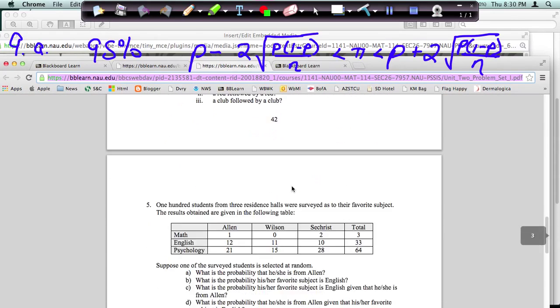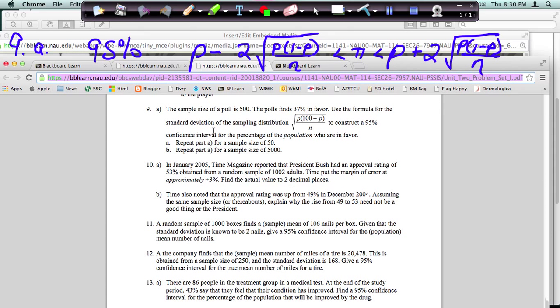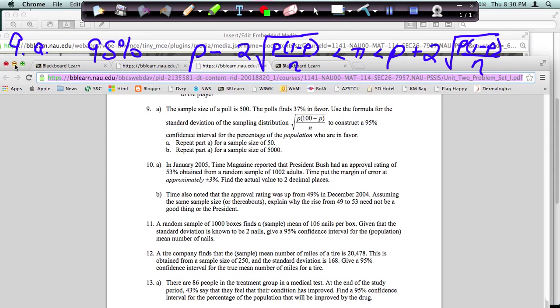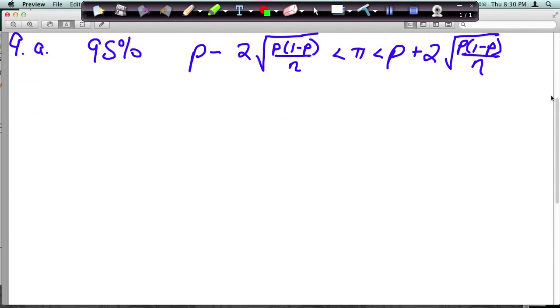So 9a said you have a sample size of 500, that's your end, and the poll finds 37% in favor. Use the formula for the standard deviation of the sampling distribution to construct a 95% confidence interval. So when doing that, you can do it piece by piece, so I'm just instead writing it out all at once. So this is the formula that you would use. And it basically took that piece that it told us, this 2 times the square root of p, 1 minus p, n, where you have to add and subtract it to your percentage you started with, and I just wrote it out.